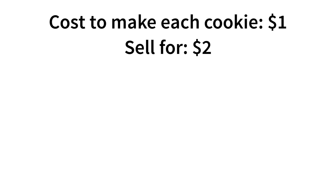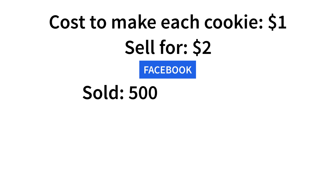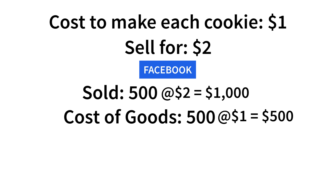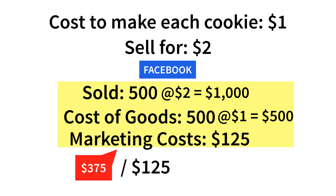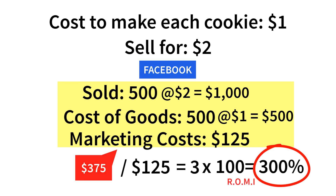Let's walk through an example. I sell cookies. Each cookie costs me $1 to make, and I sell them for $2. From my Facebook ad, I sold 500 cookies. So that would give me: 500 times $2, because I sold 500 cookies at $2 each, minus $500 which is what it cost me to make the cookies, minus $125 which is what I paid for the graphic designer and the Facebook ad spend. That gives me a total of $375. Dividing that by $125 — my marketing spend — gives me 3. Multiplied by 100, that gives me a 300% ROMI. Not too shabby.